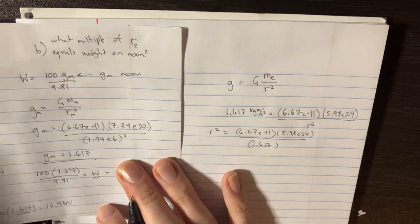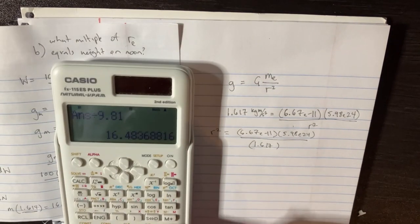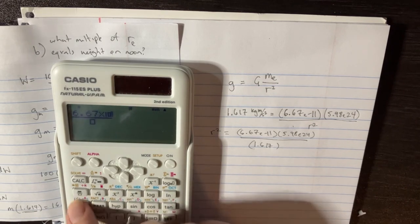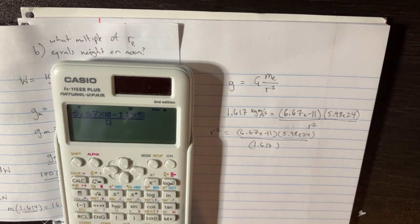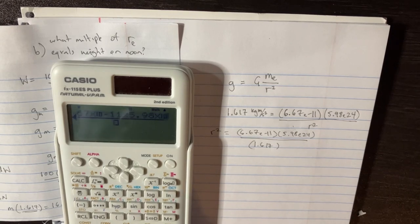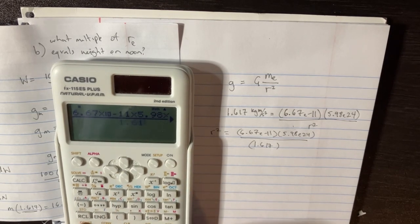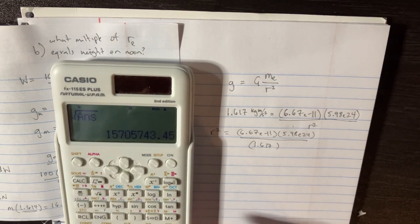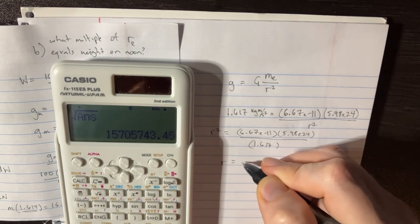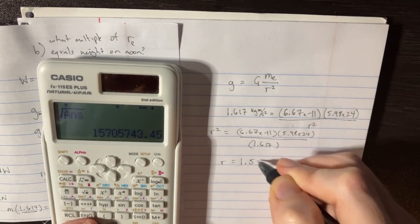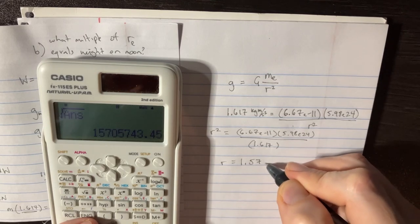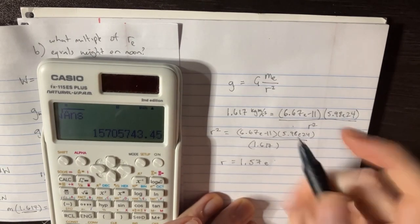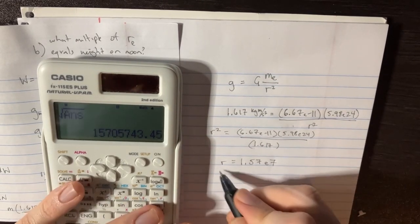So let's just plug that into the calculator real quick. 6.67 e to the negative 11 times 5.98 e to the 24, and then we'll divide that by 1.617, and let's square root that. So great, we get that r is actually equal to 1.57 e to the 7.